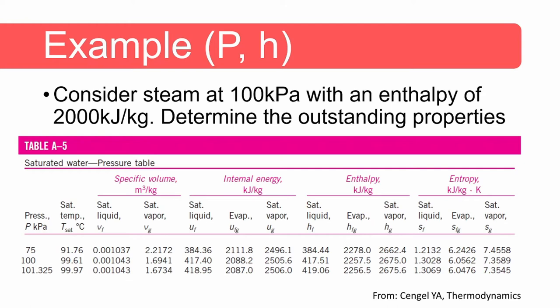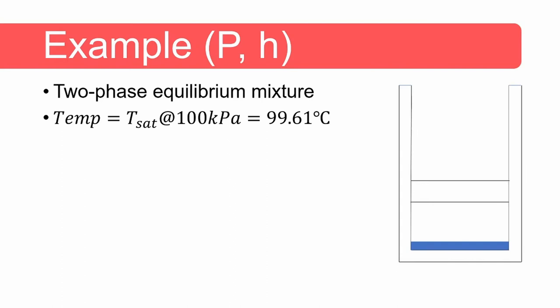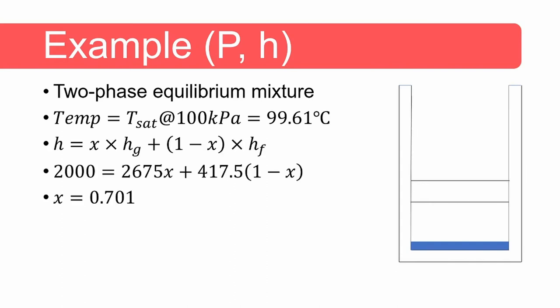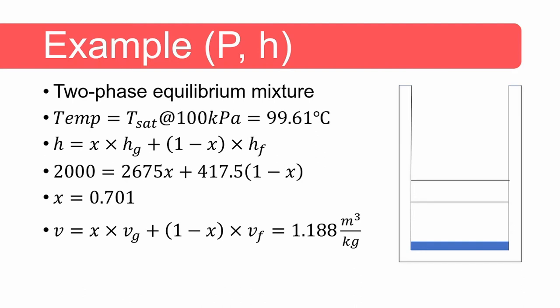In order to determine the value of specific volume, we need the value of x, also known as the quality. The enthalpy of a two-phase mixture is given by the following equation. From this we can determine the quality of our system using the known values and we get a quality of 0.701. We can use a similar equation to calculate specific volume. The specific volume values for the saturated vapor and liquid can be read from the table as well.